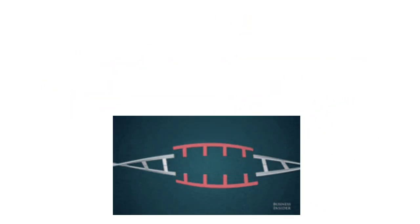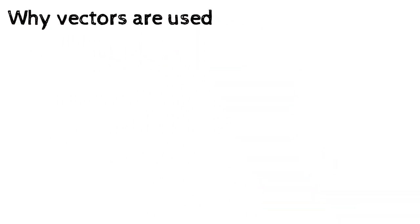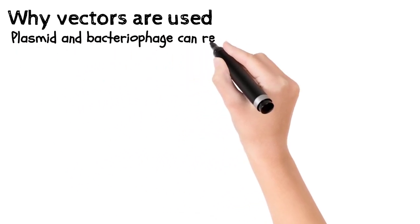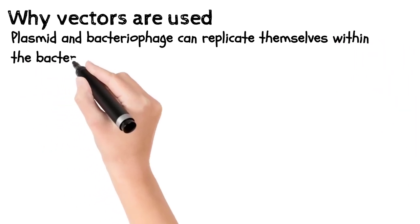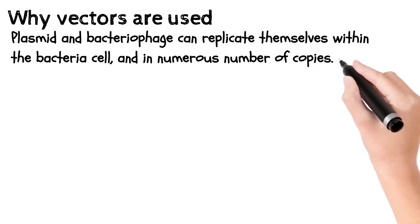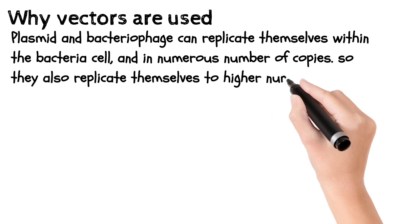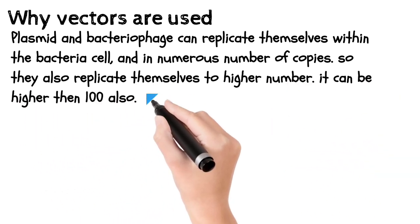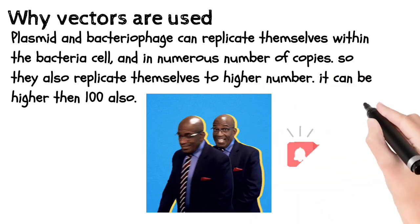Let's look at the reasons behind using vector in recombinant DNA technology. Plasmid and bacteriophages can replicate themselves within the bacteria cell in numerous number of copies, so they also replicate themselves to higher number - it can be higher than hundred also. This can be a boon for replicating our desired gene.